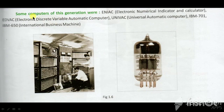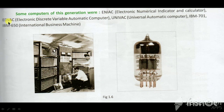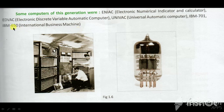Some computers of the first generation were ENIAC — Electronic Numerical Integrator and Calculator, EDVAC, EDWAC, and UNIVAC — Universal Automatic Computer. IBM stands for International Business Machines, and the IBM model of this generation was the IBM 650.